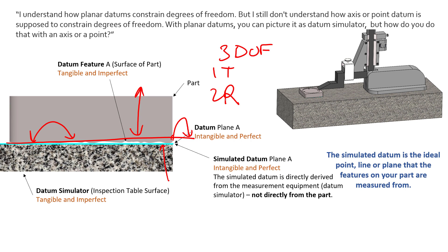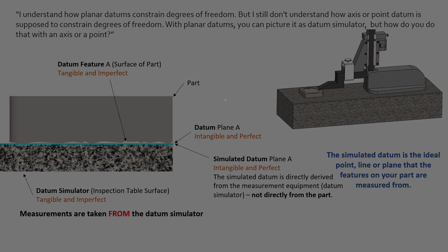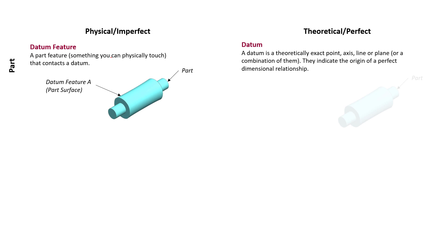But we also know that there are other datum features such as cylinders. Cylinders can create datum features as well. If we're trying to simulate a datum axis, we're going to use the physical surface of a cylinder—that's our datum feature A. What we need to create is the datum, the datum being an axis derived from the true geometric counterpart or a perfect cylinder. So we need to simulate a perfect cylinder that touches the high points, just like the plane did, touches the high points of that tangible surface. Now the axis of that perfect cylinder is our datum axis.